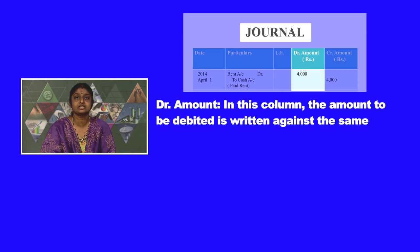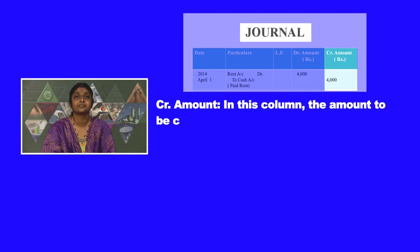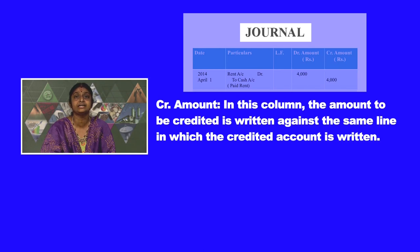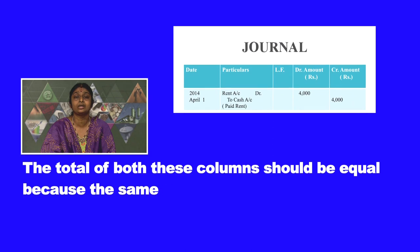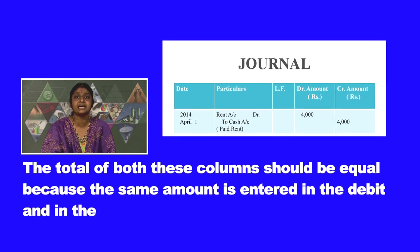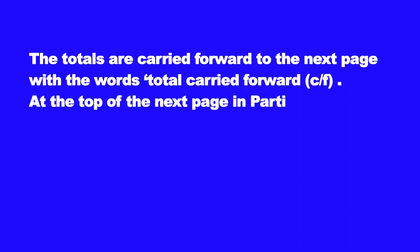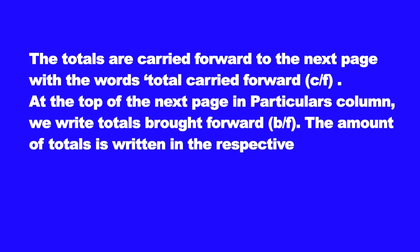In the debit amount column, the amount to be debited is written against the same line in which the debited account is written. In the credit amount column, the amount to be credited is written against the same line in which the credited account is written. The totals of both columns should be equal, because the same amount is entered in both debit and credit columns. Totals are carried forward to the next page with the words 'total carried forward', and at the top of the next page we write 'totals brought forward'.